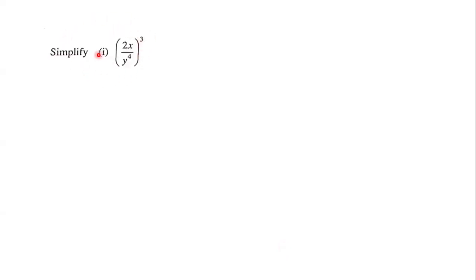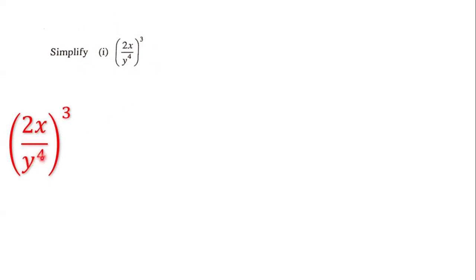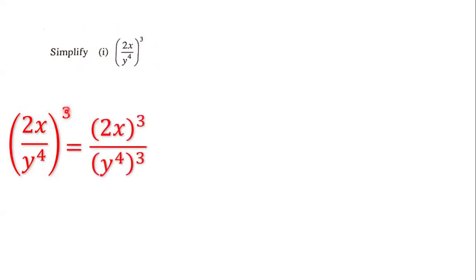Our goal is to simplify this algebraic expression. We have 2x all over y to the power of 4, and we raise this fraction to the power of 3. The first thing we're going to do is take 3 and apply it to the 2x, and take 3 and apply it to y to the power of 4. So we have 2x raised to the power of 3 over y to the power of 4 raised to the power of 3.